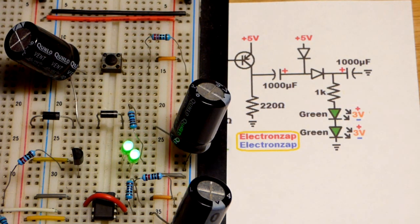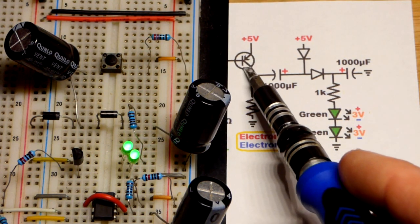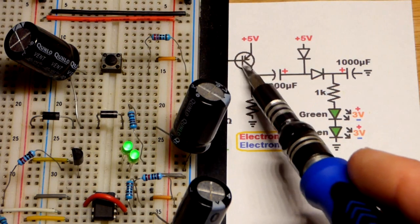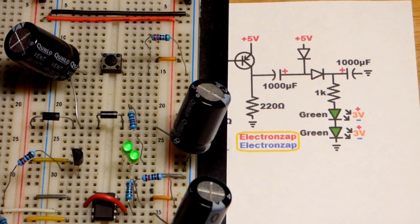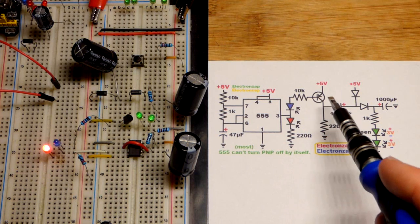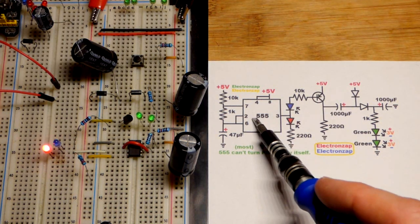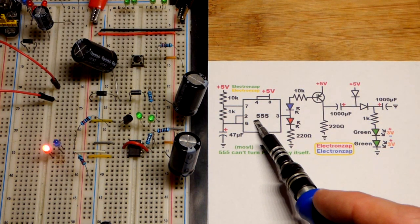In this video we're going to swap out the mechanical switch for a PNP bipolar junction transistor, and to switch that PNP bipolar junction transistor we're going to use the 555 timer.